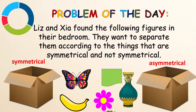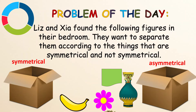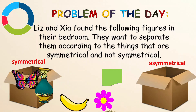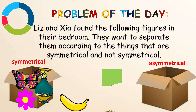Now, let's go back to the problem of the day. Let's help Liz and Sia sort these items. Starting with the symmetrical objects — the butterfly is symmetrical, the vase is symmetrical, and the flower is also symmetrical. The rest of the objects — the banana and that shape — are asymmetrical, or not symmetrical.